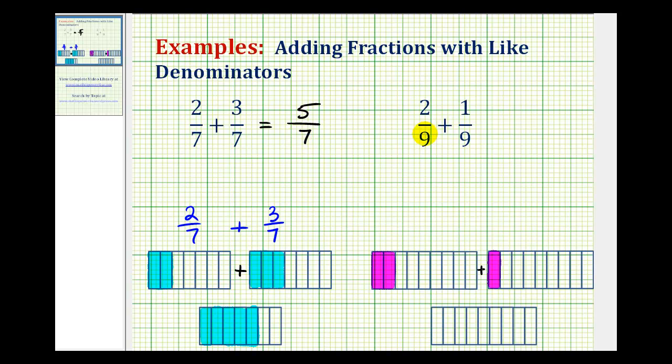Looking at our next example, we have 2/9 plus 1/9. So again, we have like denominators, so the denominator is going to stay the same, and then we add the numerators.